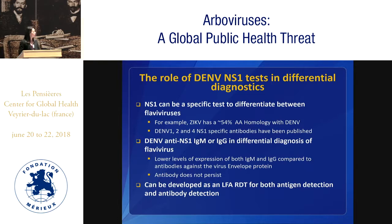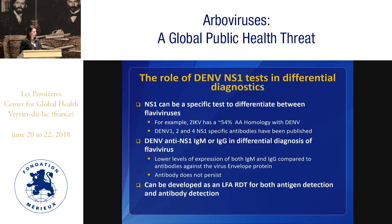Now I'm going to jump into the non-structural protein NS1. The role of NS1 in differential diagnostics is that NS1 can be a more specific test to differentiate between flaviviruses. For example, Zika virus has about 54% amino acid homology with dengue virus, and there are already specific dengue virus 1, 2, and 4 antibodies published, as well as a recently developed company ELISA test for each serotype — dengue 1, 2, 3, and 4. The other thing NS1 could be used for is anti-NS1 IgM or IgG to differentiate between flaviviruses. However, you typically have a lower expression of both IgM and IgG against NS1 compared to what you have for the envelope protein, so the antibody doesn't persist as well, making it quite difficult to really test for past infection.